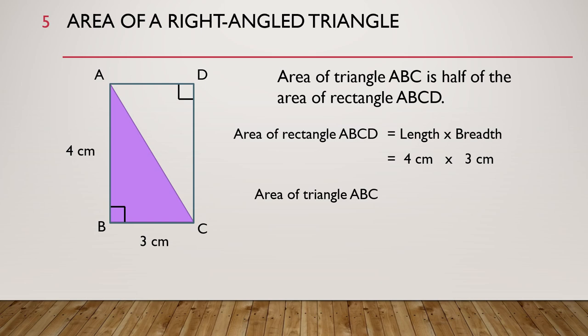Then the area of triangle ABC is half of the area of rectangle ABCD. So it is equal to half times 4 cm times 3 cm, and you get 6 square cm. That's how you find the area of a right-angled triangle.